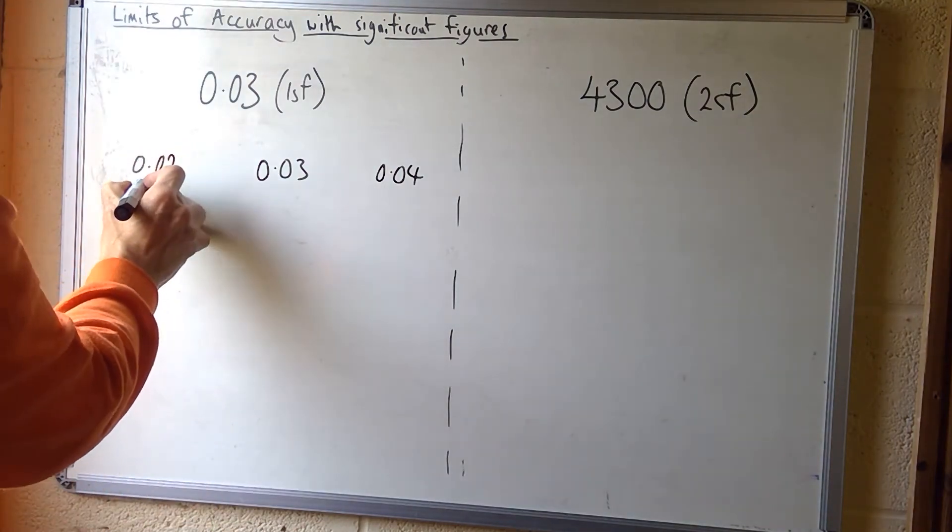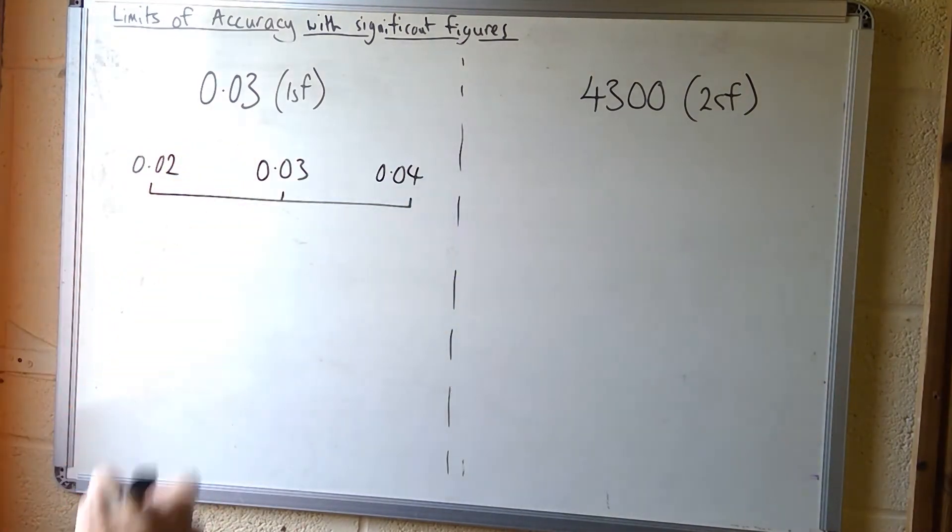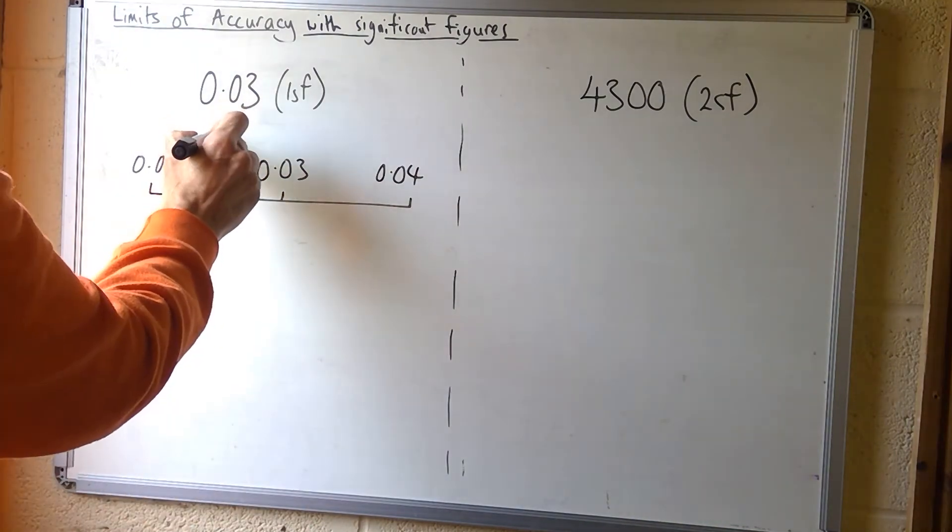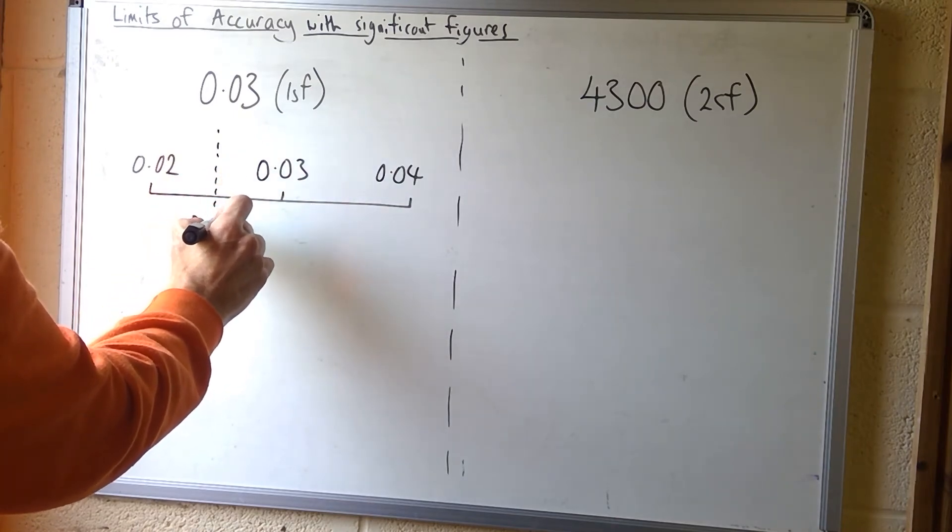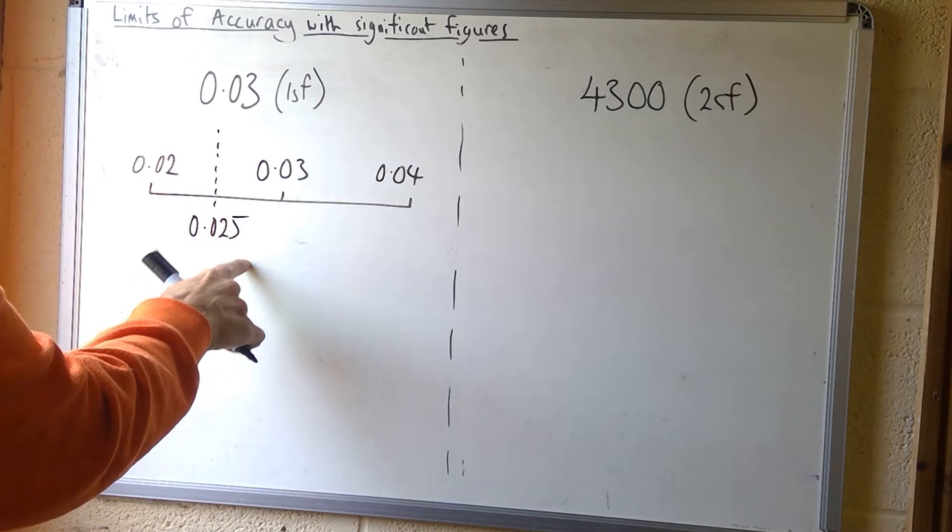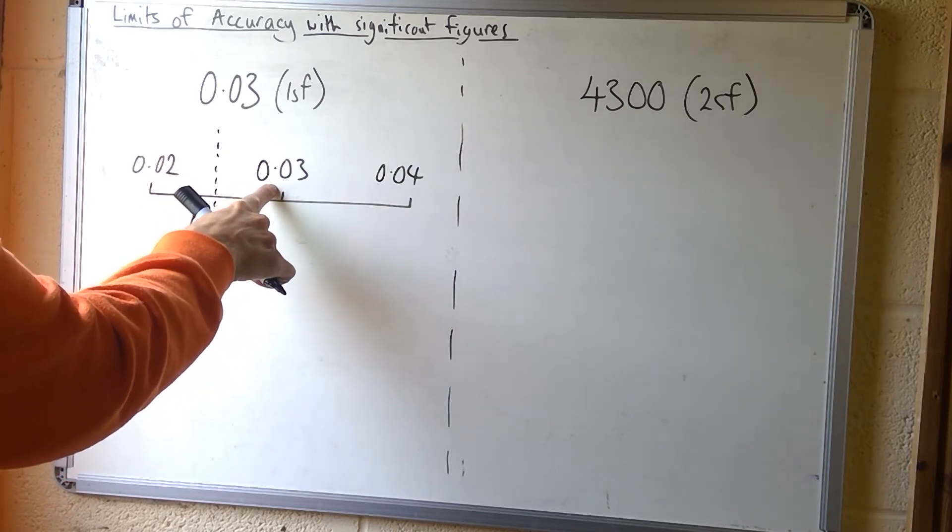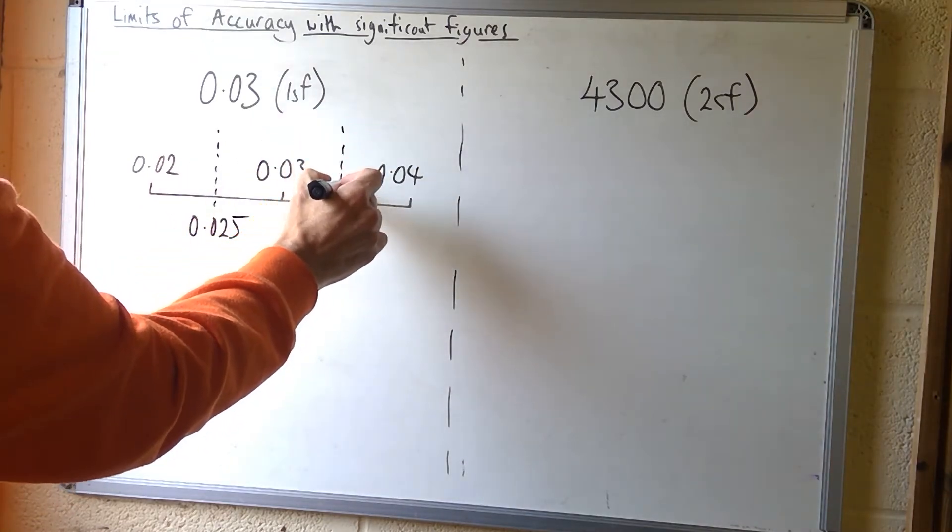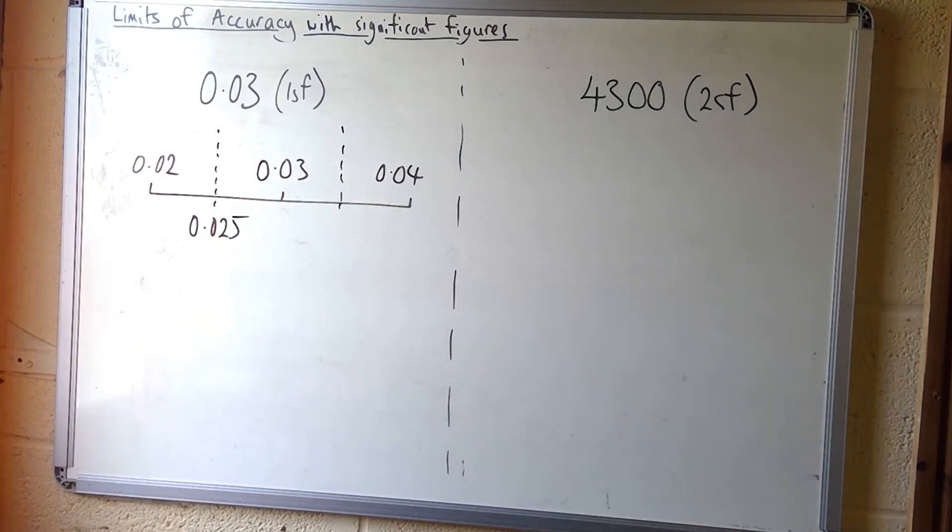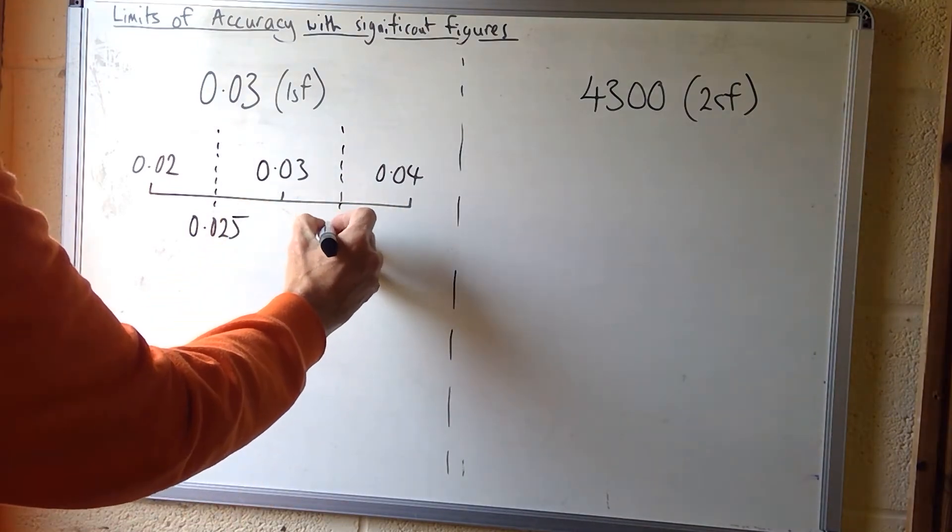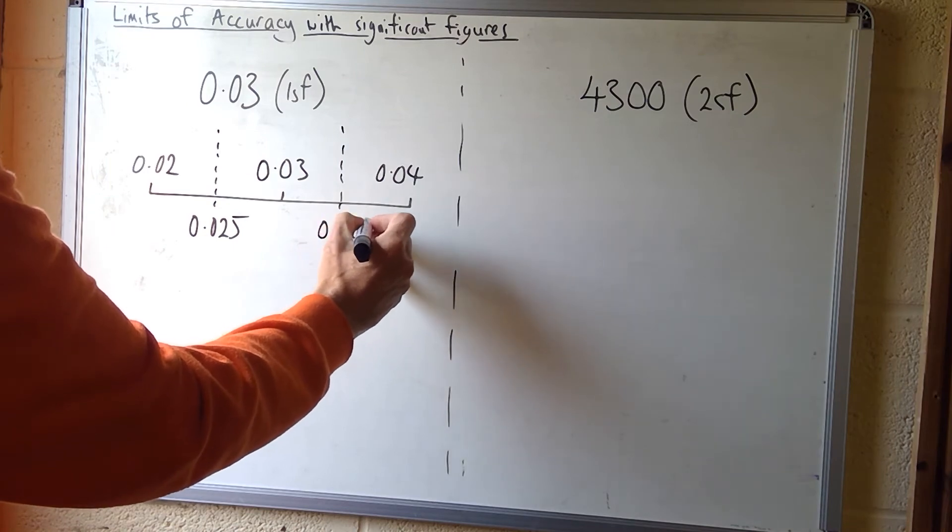We use this idea of a scale that we've used before when looking at limits of accuracy. Halfway between, the lower bound would be 0.025, where it begins to round to 0.03. Where it stops rounding to 0.03 and rounds to 0.04 will be 0.035.